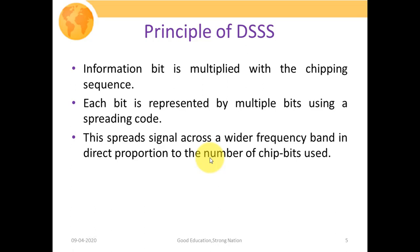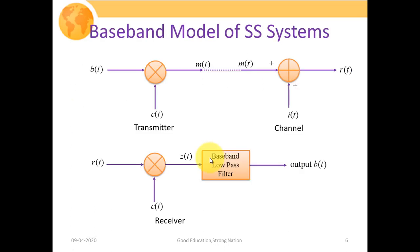The processing gain, which is the ratio of bandwidth after spreading divided by bandwidth before spreading, will be higher when the chipping sequence is large. Now we are going to discuss the baseband model of the spread spectrum system.